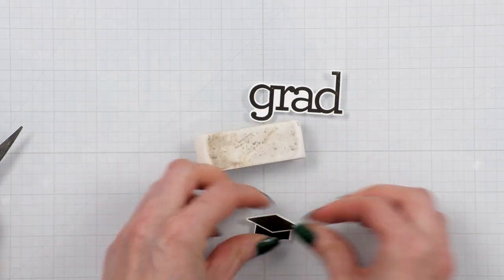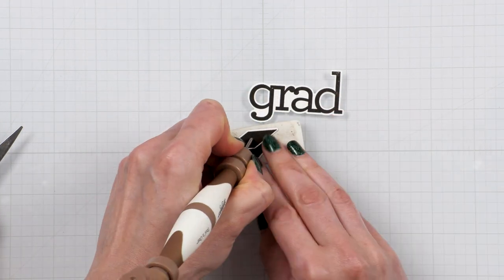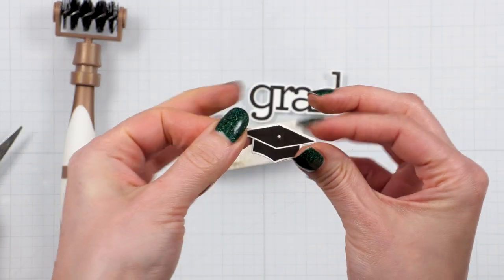I then used a pencil eraser as a rubbery surface to poke a hole in the center of my cap. That's where our tassel is going to go.